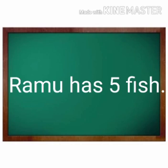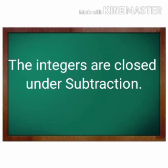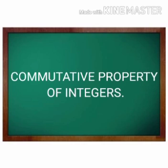In this example, we see that the difference of two integers is also an integer. Therefore, we can say that the integers are closed under subtraction. In general, for any two integers A and B, A minus B is an integer.